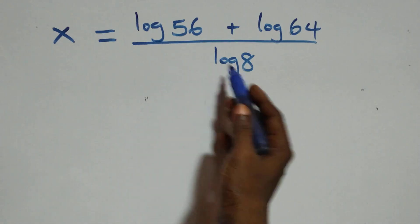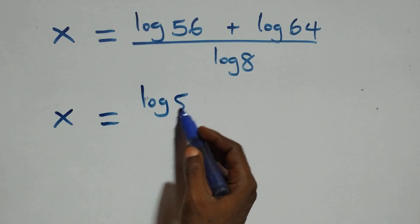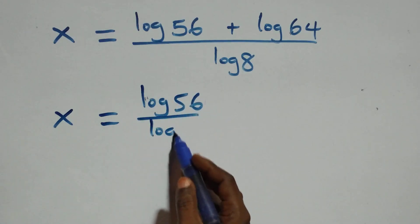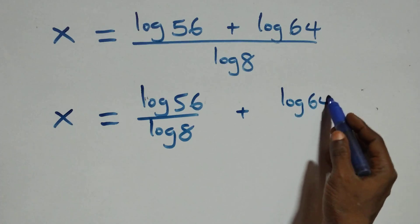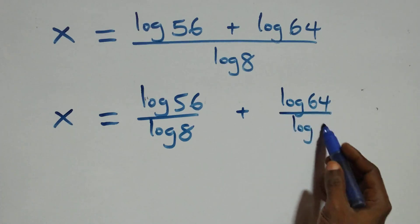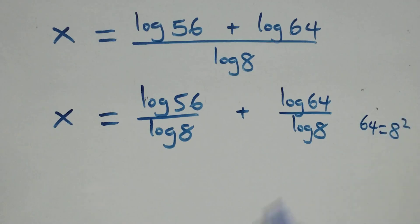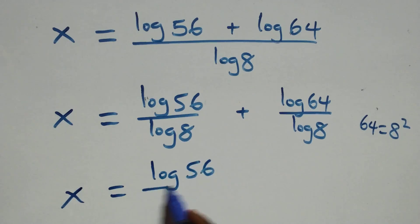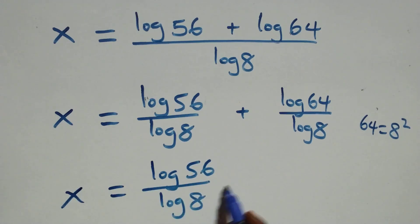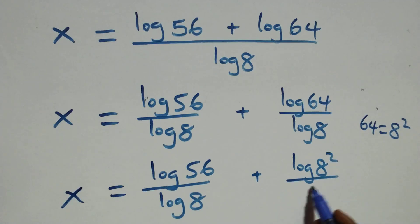Next step, we separate this into two fractions, and we have x equals log 56 over log 8 plus log 64 over log 8. Now log 64 can be written as log 8 squared over log 8.